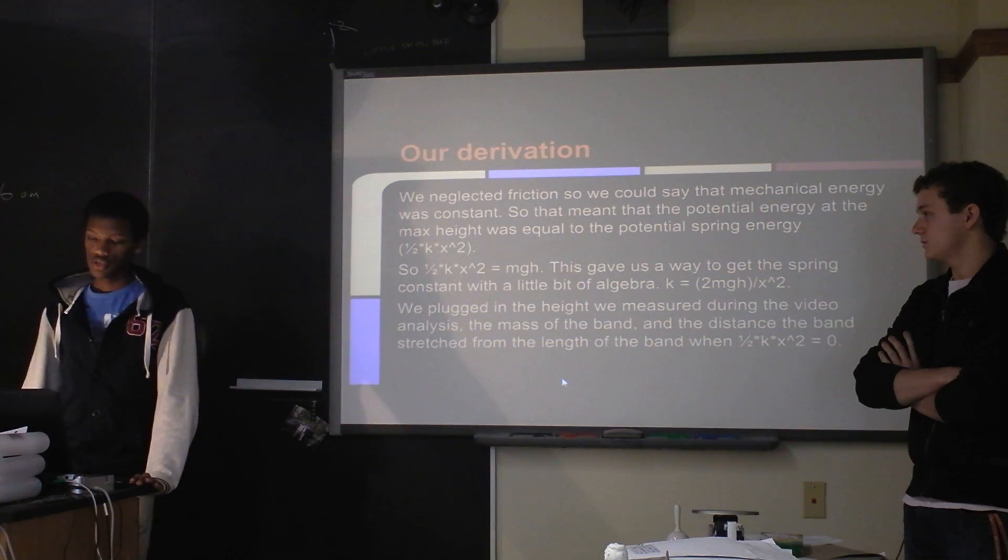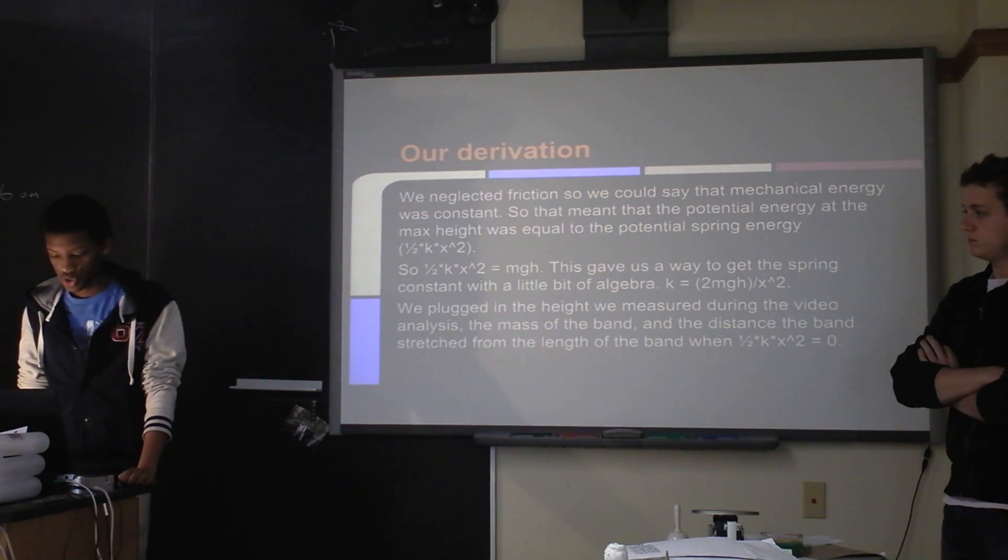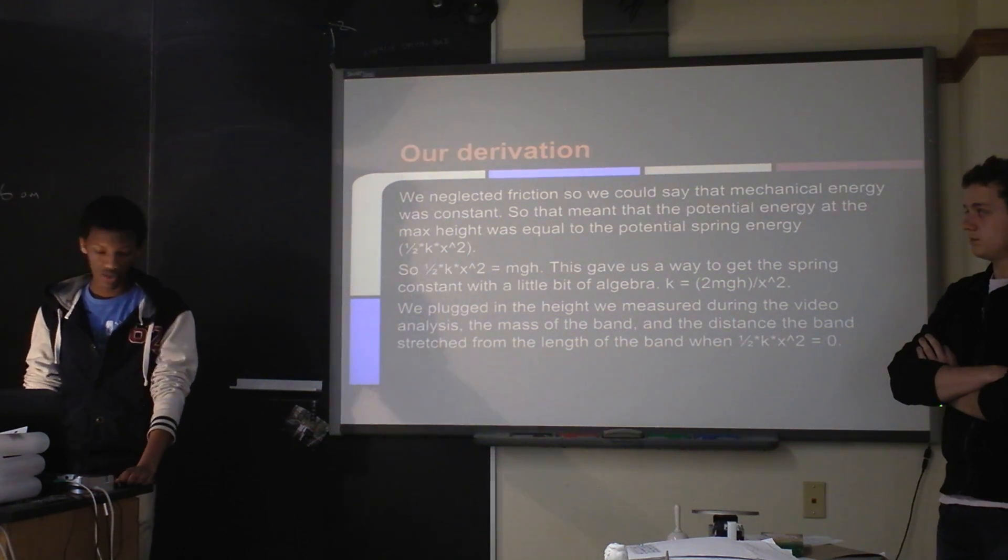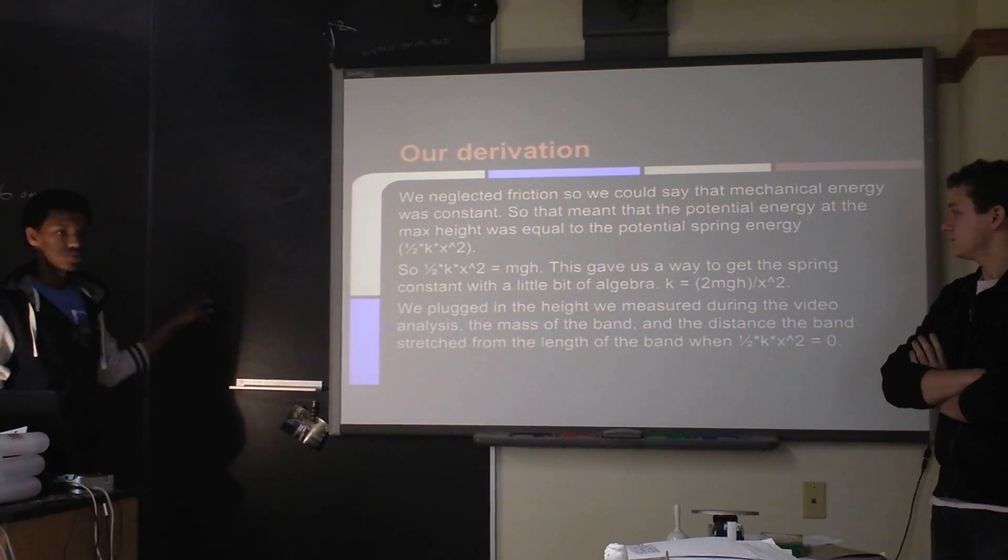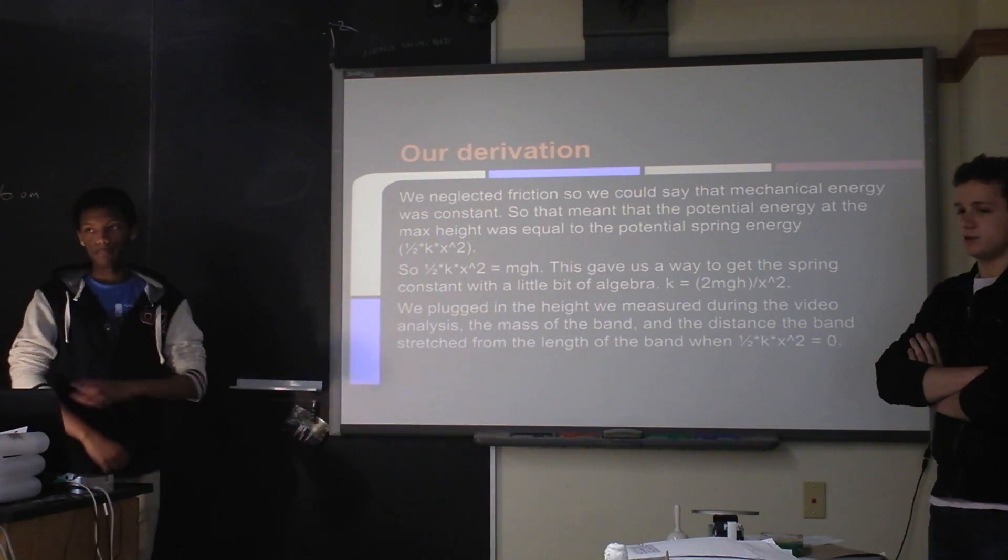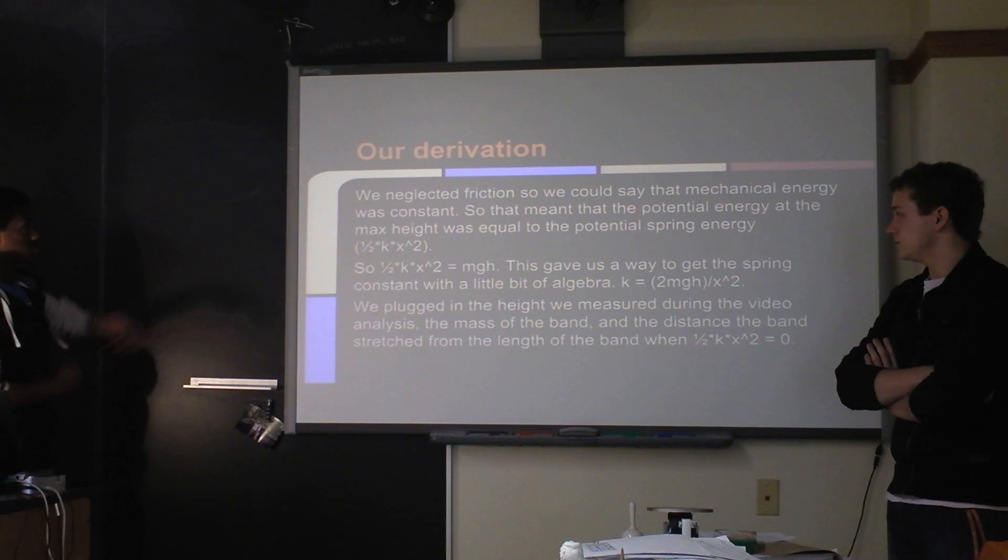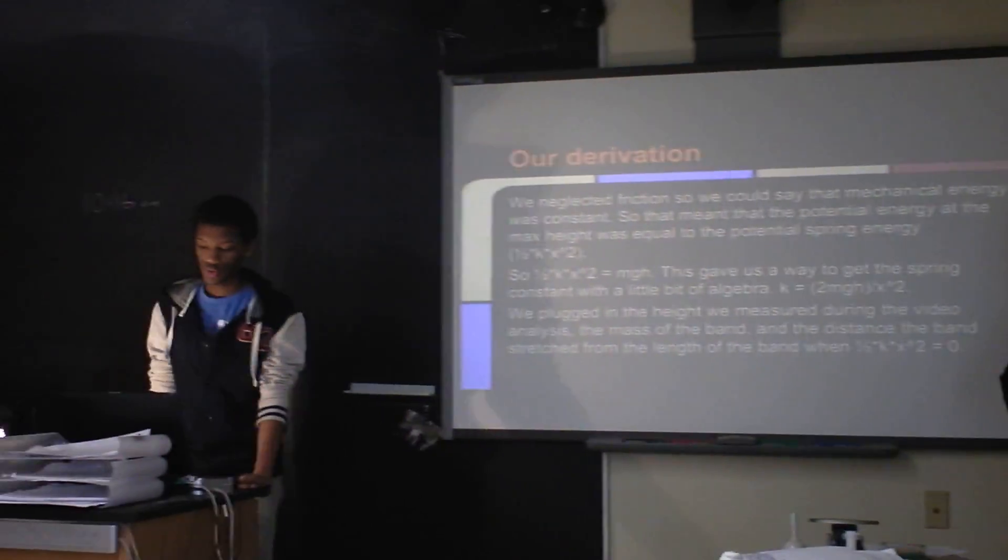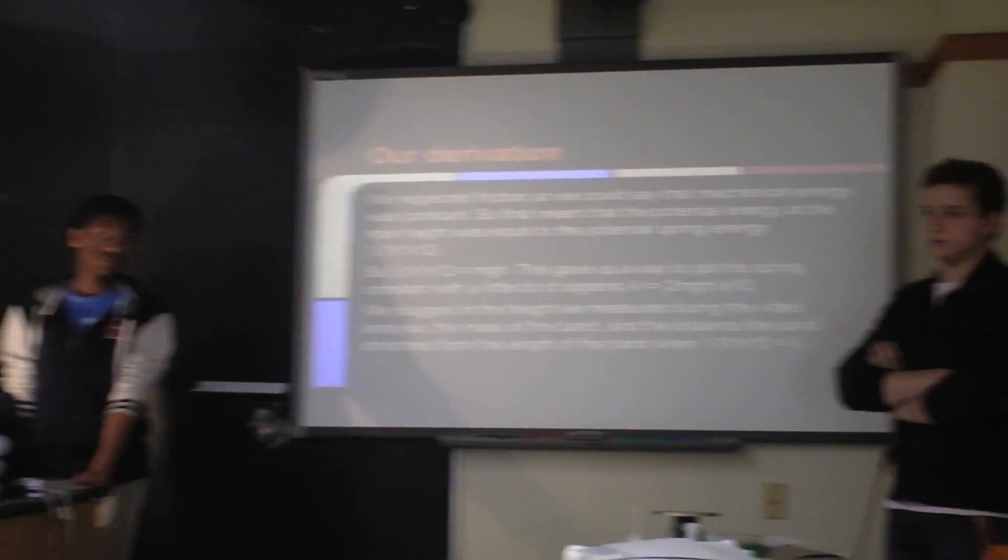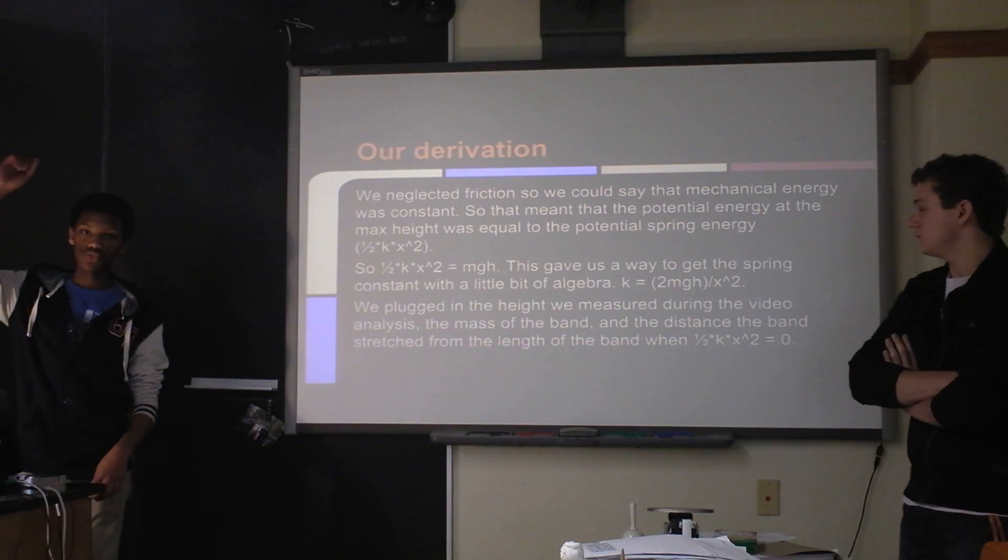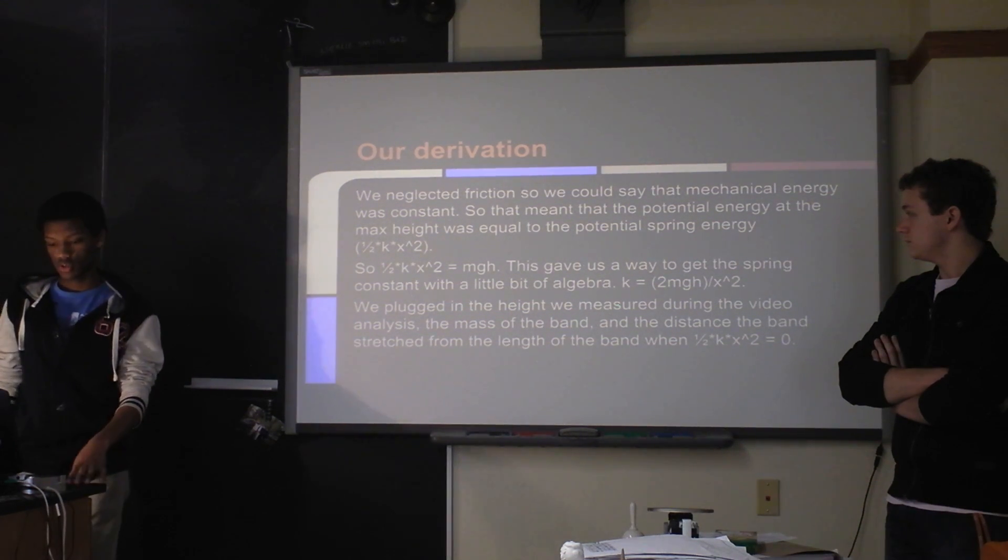So our derivation. We used energy to find its spring constant, using the potential energy and the kinetic energy. At the bottom of the meter stick before we shot it up, we set spring potential energy equal to gravitational potential energy. At the very top of its flight, the velocity would be zero, so there would be no kinetic energy. All the spring potential energy converted to gravitational. So those two energies at the very top and at the bottom would be equal, and then using the equation we found it algebraically.